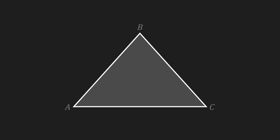The angles are written using the corresponding Greek letter, so for corner A that is alpha, for B that's beta and for C that's gamma. The sides opposite to a corner are written with the corresponding lowercase letter, so for point A that's a, and then b and c for points B and C.